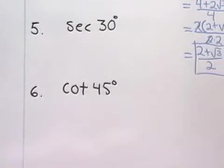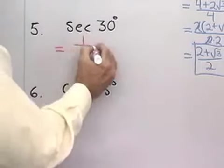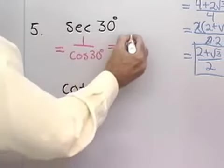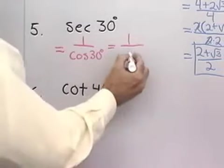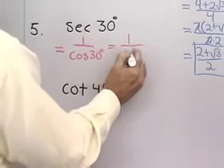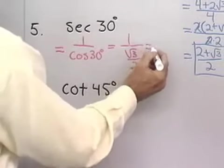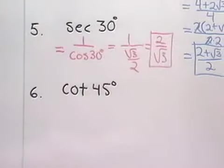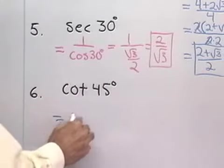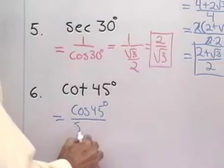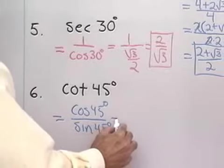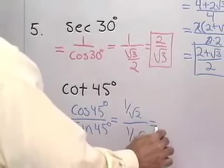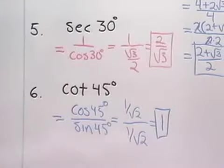Next: secant of 30 degrees. I don't have that memorized, but I know secant is the reciprocal of cosine. So secant of 30 equals 1 over cosine of 30. Cosine of 30 degrees is square root of 3 over 2, so the reciprocal is 2 over square root of 3. Next: cotangent of 45. Cotangent is cosine divided by sine. Cosine of 45 is 1 over square root of 2, and sine of 45 is also 1 over square root of 2. Dividing gives 1, so cotangent of 45 equals 1 — the same value as tangent of 45.